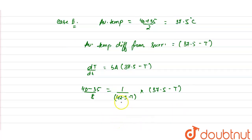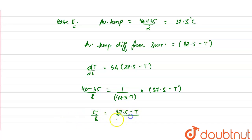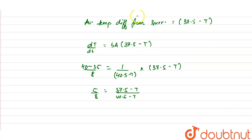In this equation, the only variable is the surrounding temperature T. Solving, we get 5/8 = (37.5 − T) / (42.5 − T), and the surrounding temperature comes out to be 29.16 degrees Celsius.